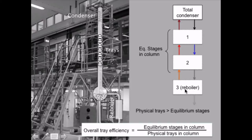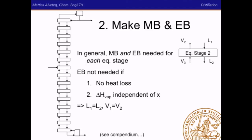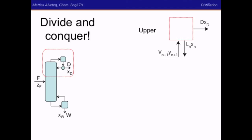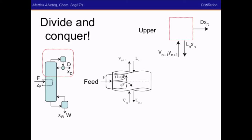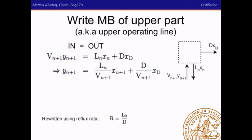We divide the system into a certain number of equilibrium stages and make mass balances. We don't need an energy balance if there is no heat loss and if the evaporation enthalpy is independent of composition. Writing the mass balance for the upper part: we have one inflow and two outflows. At steady state with no reaction we get in equals out: V·y = L·x + D·x_D. We can rewrite that as y = (L/V)·x + (D/V)·x_D, and further using the reflux ratio R = L₀/D to get y = (R/(R+1))·x + (1/(R+1))·x_D.